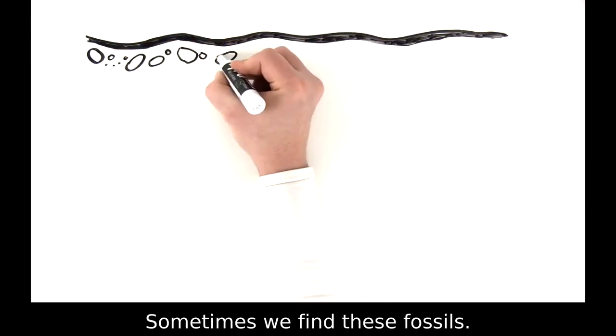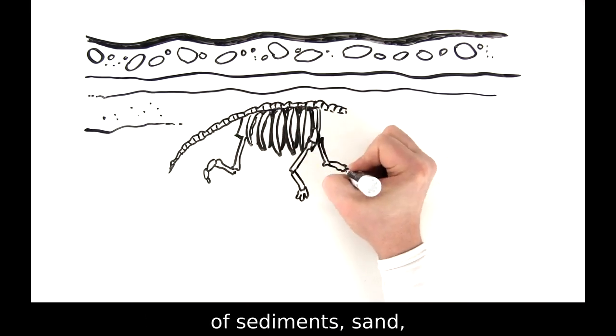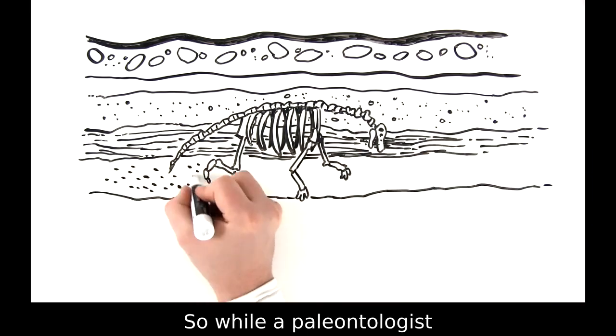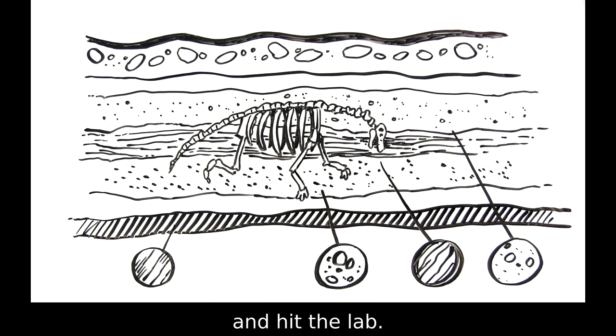Sometimes we find these fossils. When we do, they're usually sandwiched between millions of years worth of sediments, sand, or a mixture of sand and volcanic material. So while a paleontologist pours over the bones, we grab samples from various sediments and hit the lab.